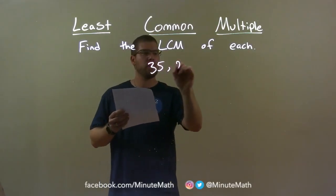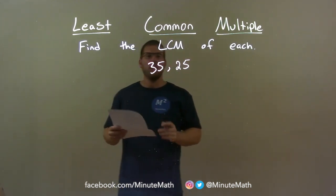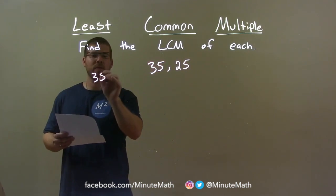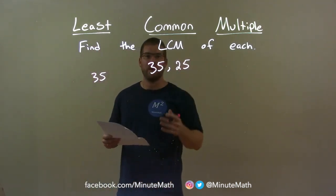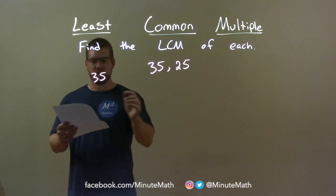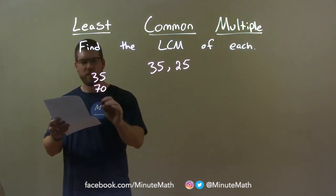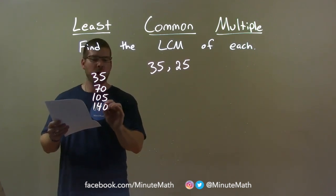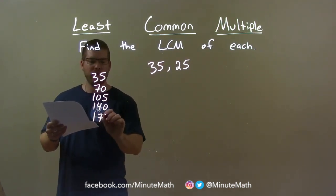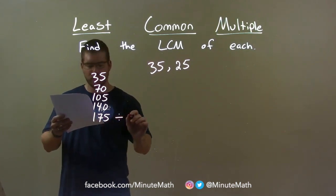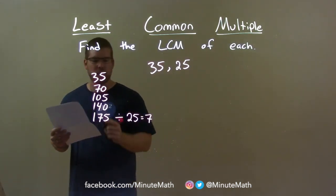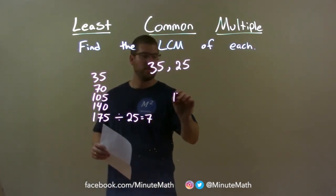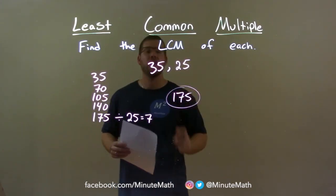35 and 25. I take the larger of the two numbers, 35, and go through its multiples to find which one is also divisible by 25. 35 is not, and 70 is not divisible by 25, and neither is 105. Then 140 also cannot be divided by 25, but 175 can. 175 divided by 25 is 7. So 175 is my final answer.